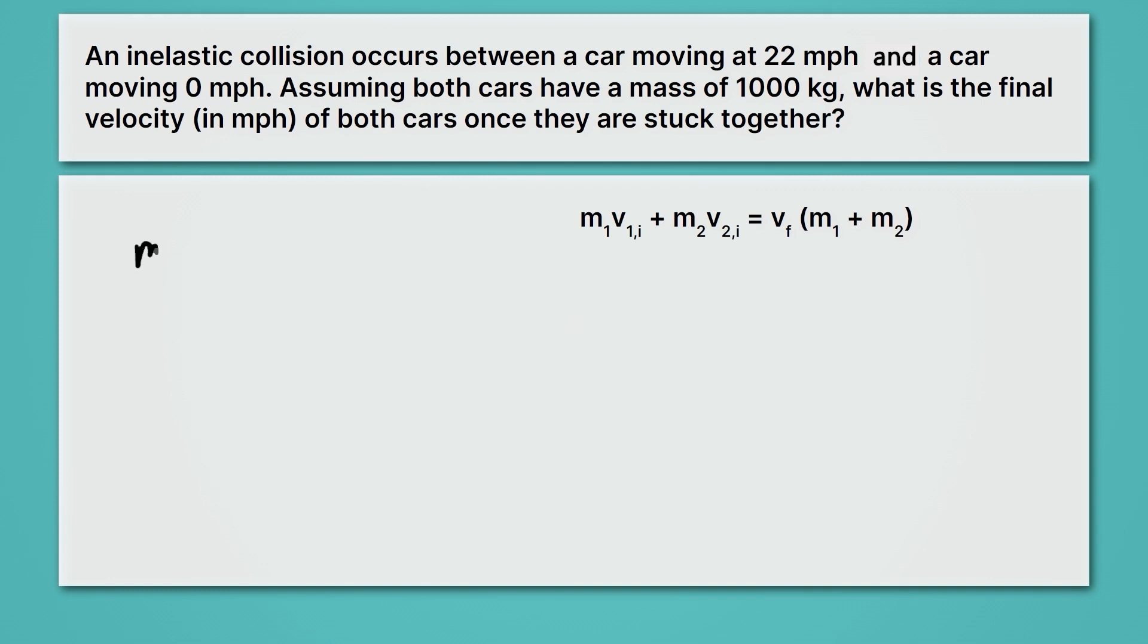We know the mass of the first car is 1000 kilograms. Next, we know the velocity of the first car initially, and we know that's 22 miles per hour. We know the mass of the second car is also 1000 kilograms. And we know the velocity initial of the second car is zero. It's at rest. What we're looking for is the velocity final of both cars stuck together. So they're going to collide and then both slide forward stuck together, of course, until friction slows them down all the way to zero.